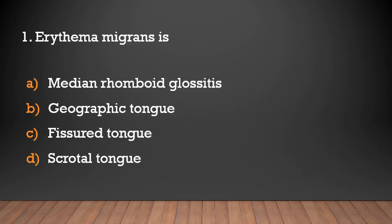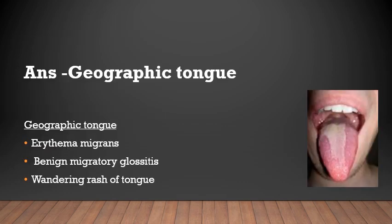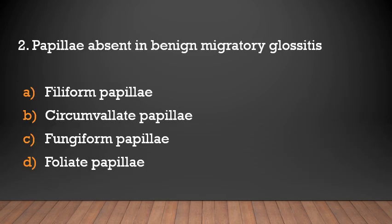Geographic tongue, also known as Erythema migrans, median rhomboid glossitis, fissured tongue, and scrotal tongue are among the topics. Geographic tongue is also known as Erythema migrans, benign migratory glossitis, and wanton brush of tongue. Regarding papillae: filiform papillae, circumvallate papillae, fungiform papillae, and foliate papillae.